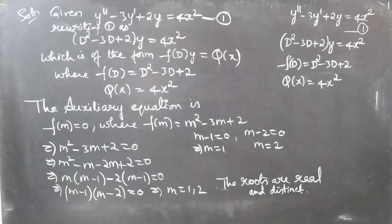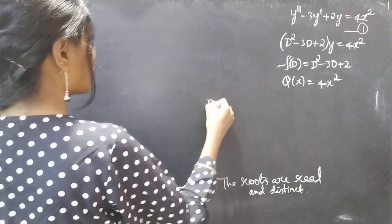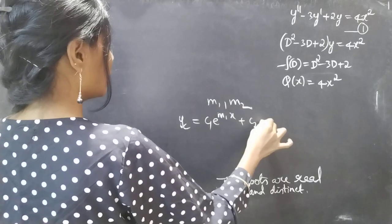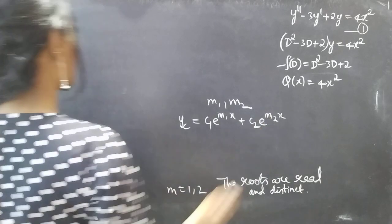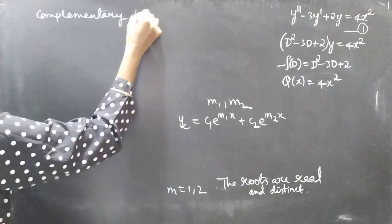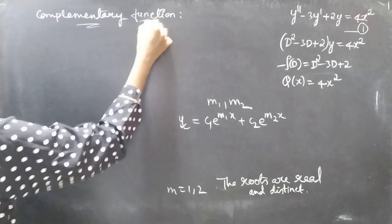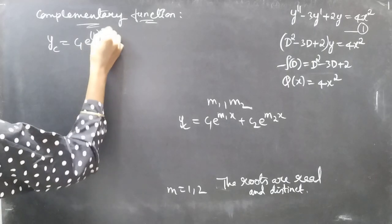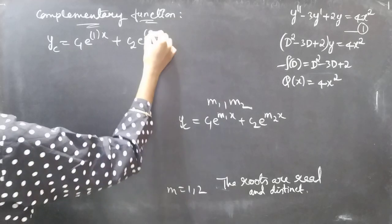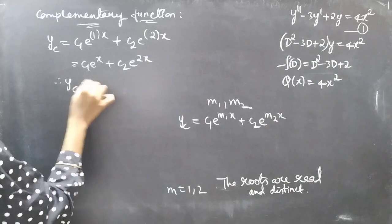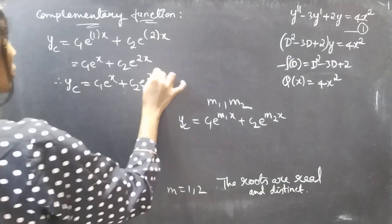With these real and distinct roots m₁ = 1 and m₂ = 2, the complementary function takes the form yc = c₁·e^(m₁x) + c₂·e^(m₂x). Therefore yc = c₁·eˣ + c₂·e²ˣ.